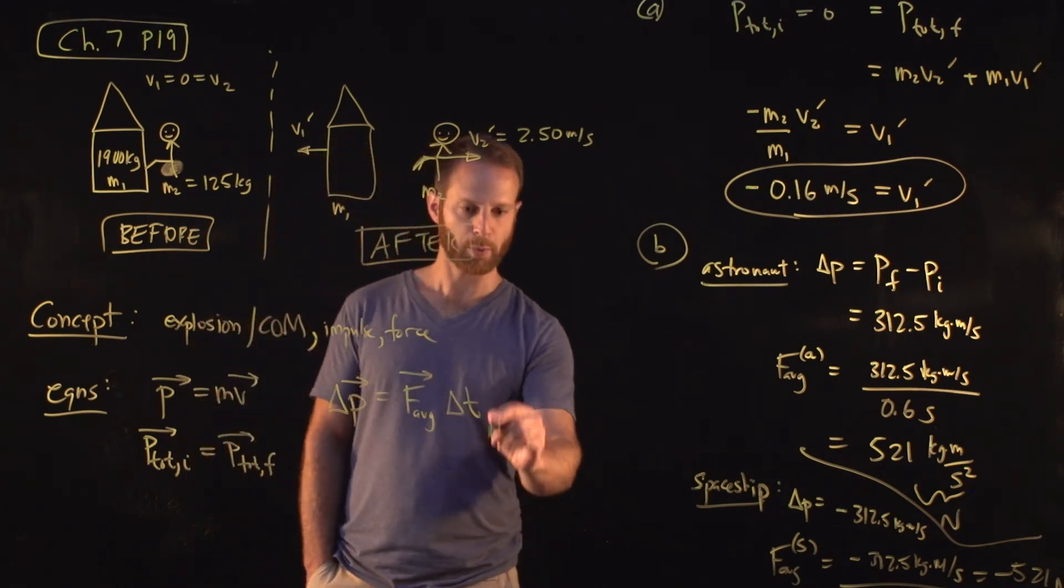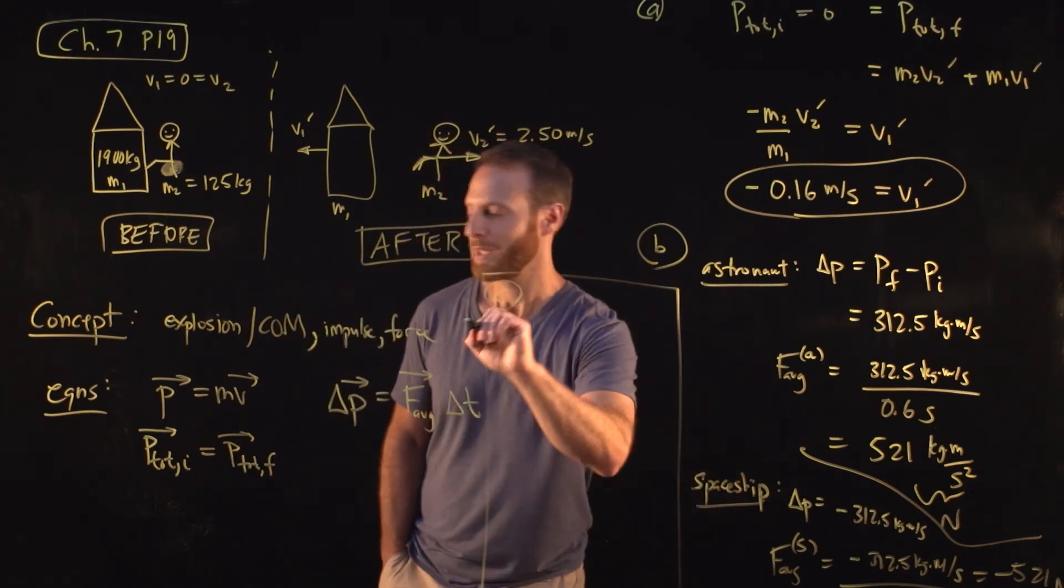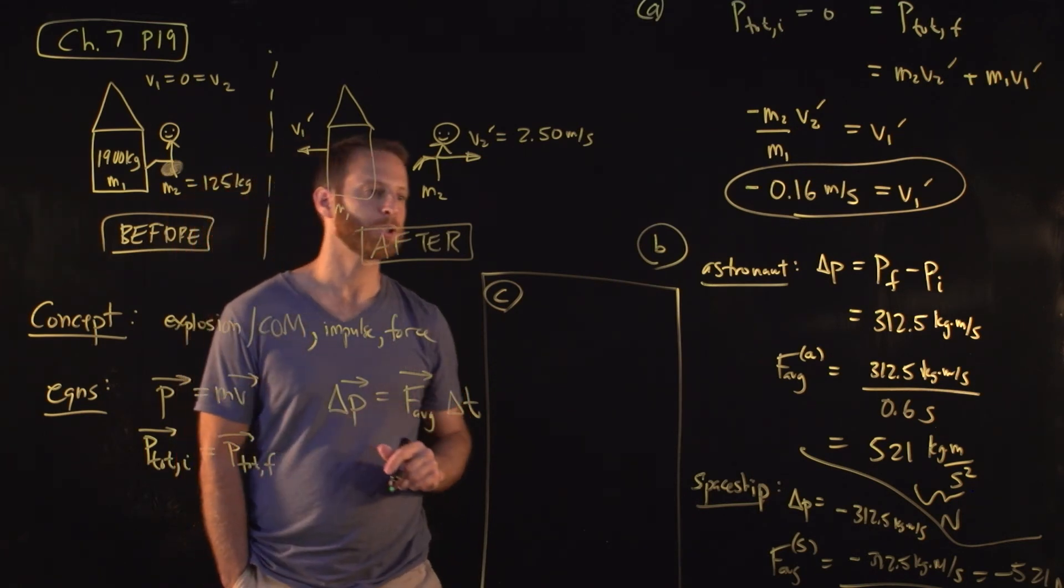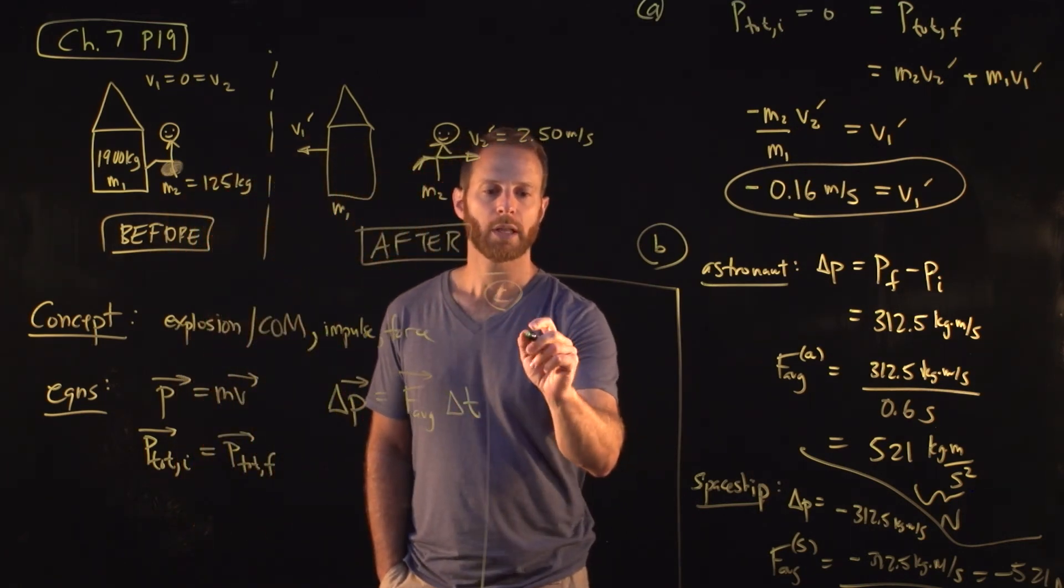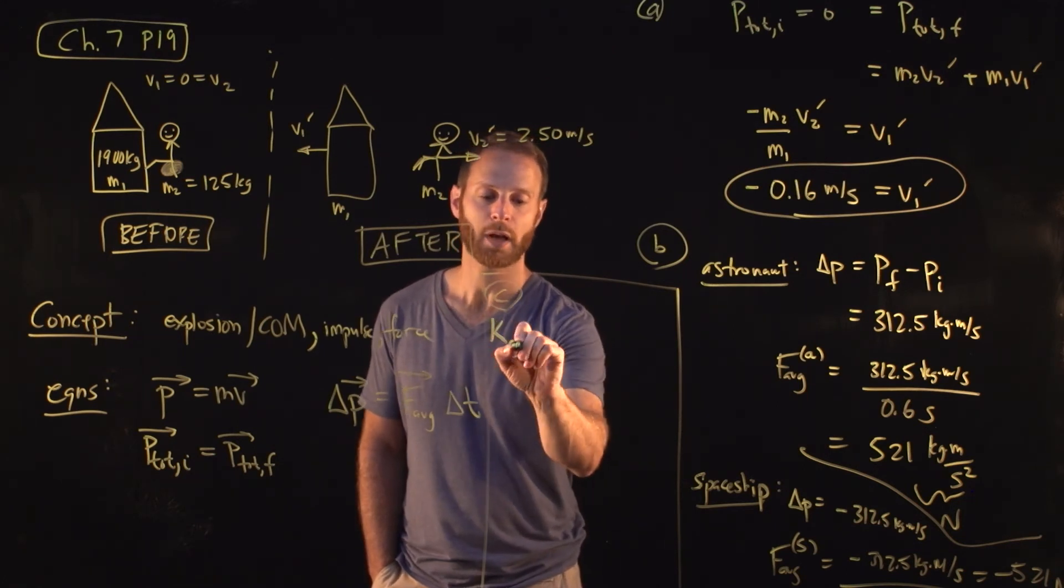Finally, in part C, which I'm going to go ahead and put right over here, you want to ask, what is the kinetic energy of each after the push? And so, if you like, the kinetic energy, the total kinetic energy, or the kinetic energy of the astronaut, would be one-half times the mass of the astronaut. That is M2, as we've labeled, times V2 prime, and square it.